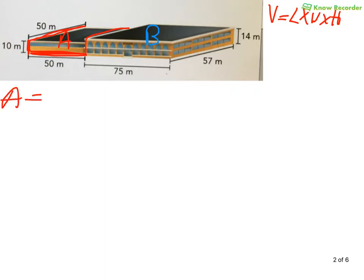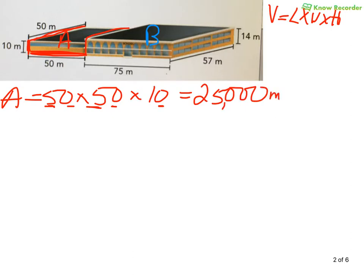My length is my horizontal. My height is my vertical. And my width is always my diagonal. You will always need all three. So A will equal 50 times 50 times 10. And just to do it mentally, 50 times 50, well 5 times 5 is 25, with two zeros that would be 2,500 times 10, which is another zero, 25,000 cubic meters.